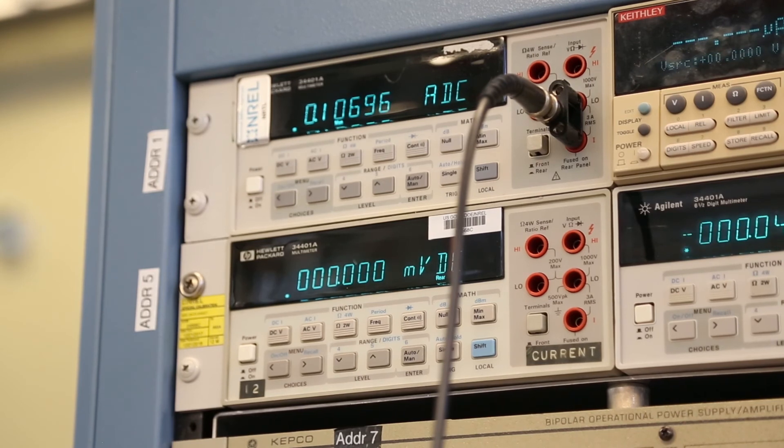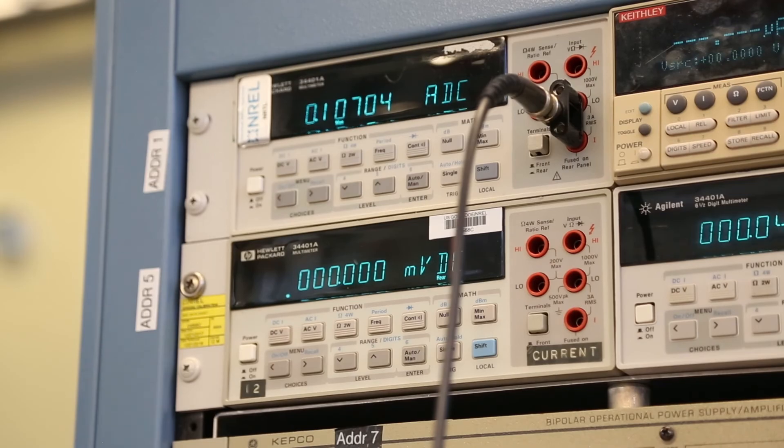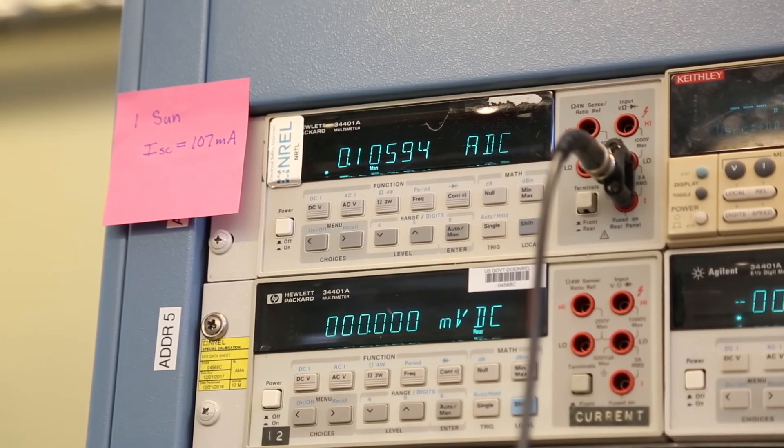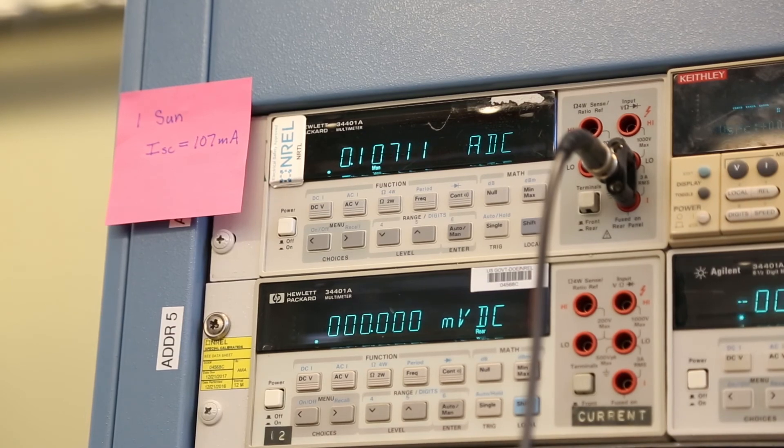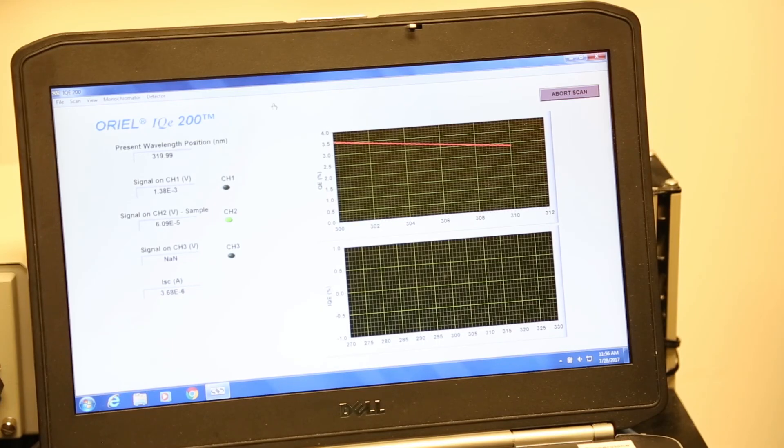Once you calculate your spectral mismatch factor M, you can set the one sun intensity with your reference cell. Then obtain your JV curve. After you're done measuring the JV curve of your test cell, you can apply the spectral mismatch factor by dividing all current values by M.